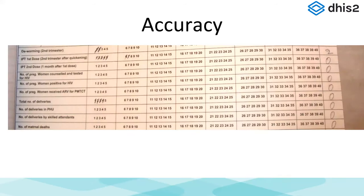For accuracy, here's another example from the field — a data entry form with IPT first doses. It's a tick form where they've ticked off one through seven, but then they have to do a manual aggregation, and if you follow it all the way to the right, they've written two. They ticked off seven but aggregated to two. Is that accurate? It could be seven, it could be two — it's probably seven if they filled out the form correctly. And what goes into DHIS2? Probably that two. Accuracy needs to go all the way down to individual reporting forms, and you need to check for this in your standard operating procedures and routine supervision.